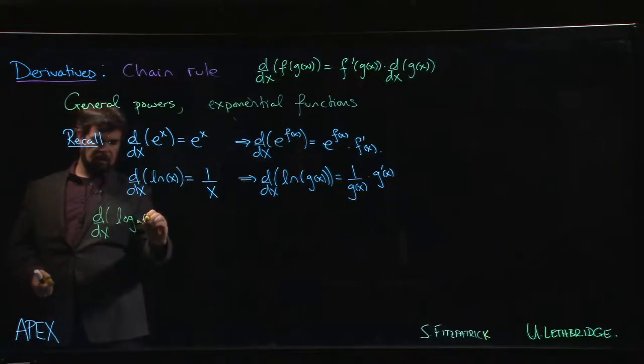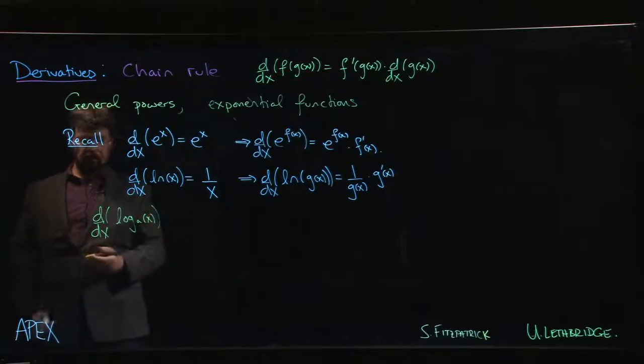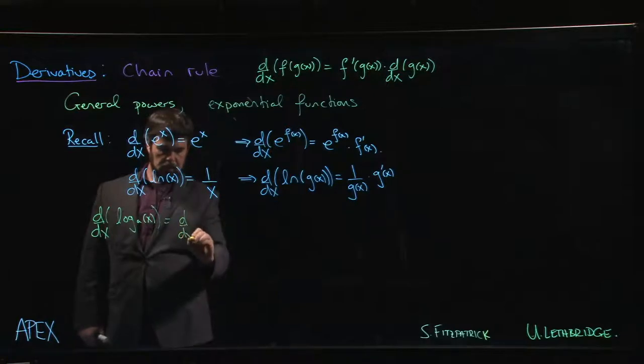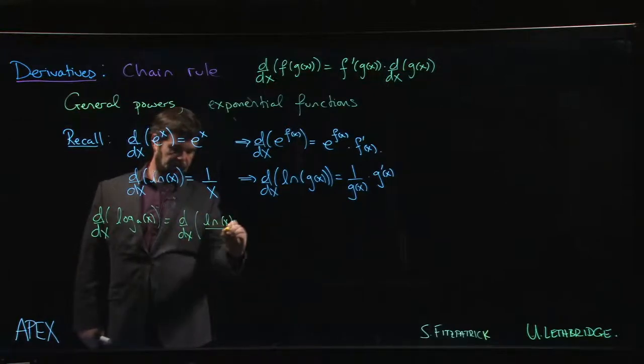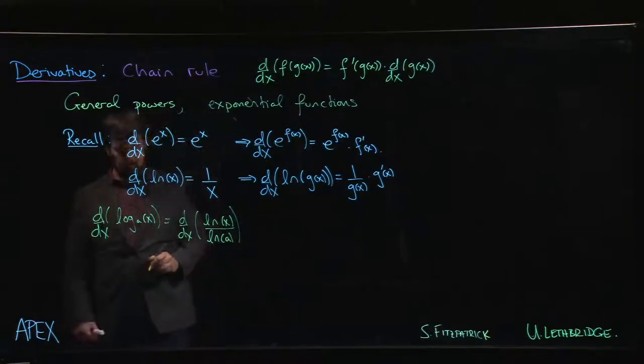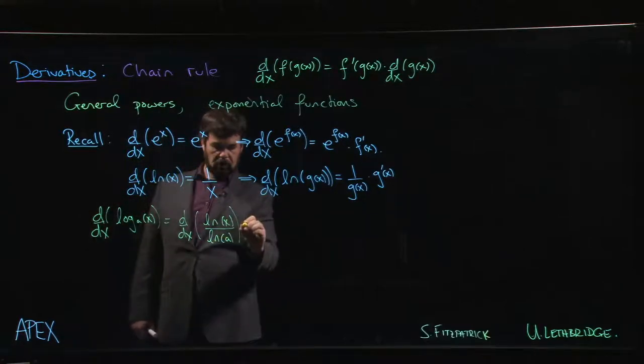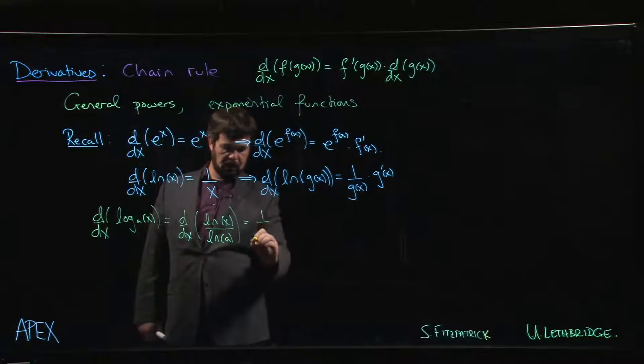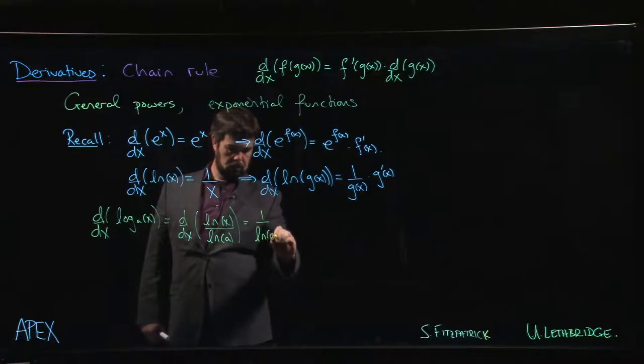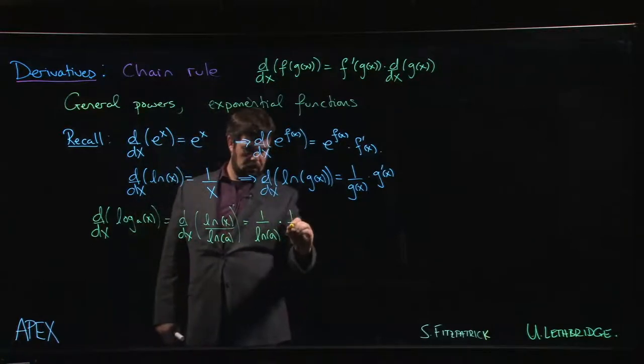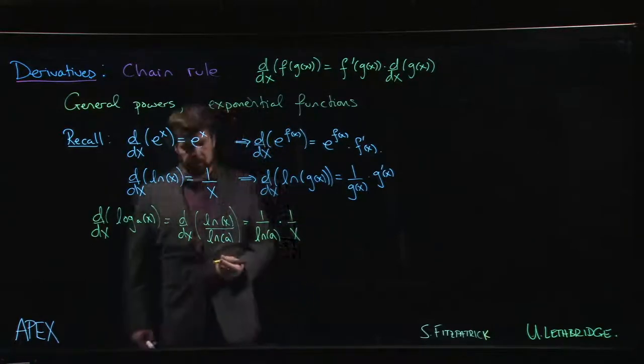So what about if we wanted to take the derivative of, let's say, the base a log of x? Well, this is actually pretty easy because we have a change of base formula that says this could be written as the natural log of x divided by the natural log of a. And this 1 over natural log of a is just a constant multiple. So you can bring that outside and then multiply by the derivative of the natural log of x, which is 1 over x.